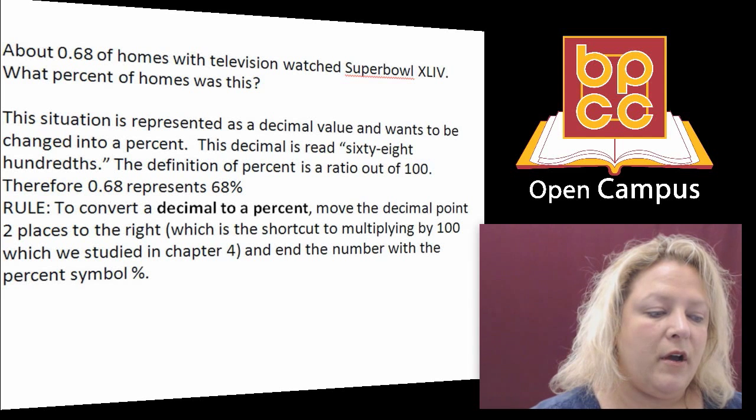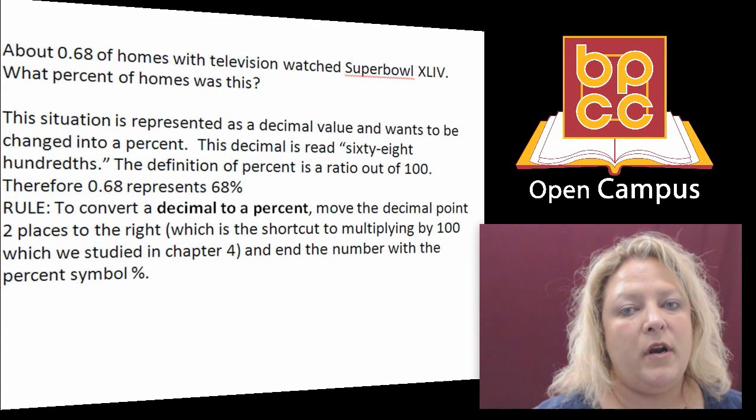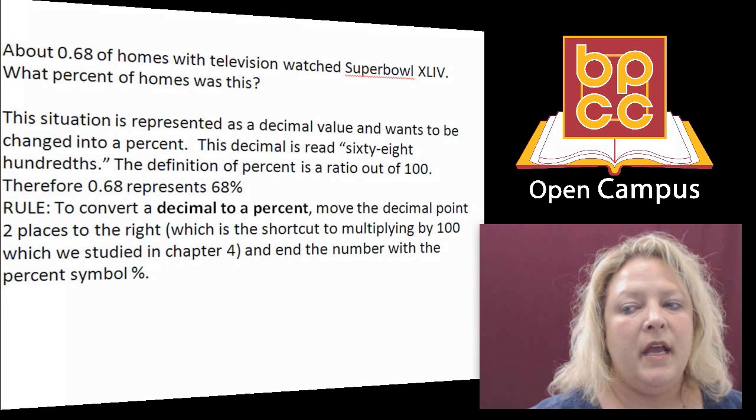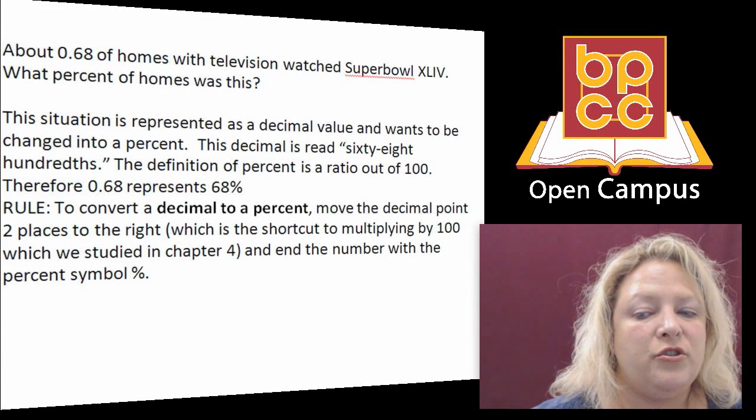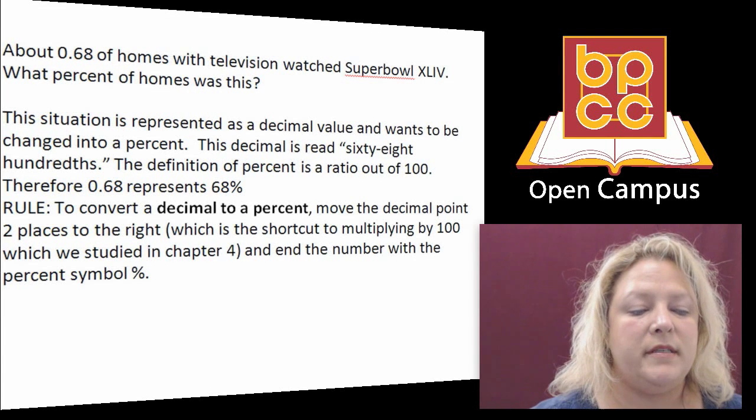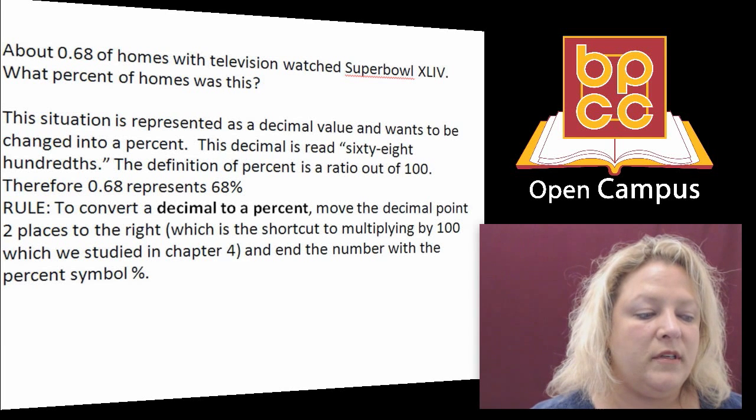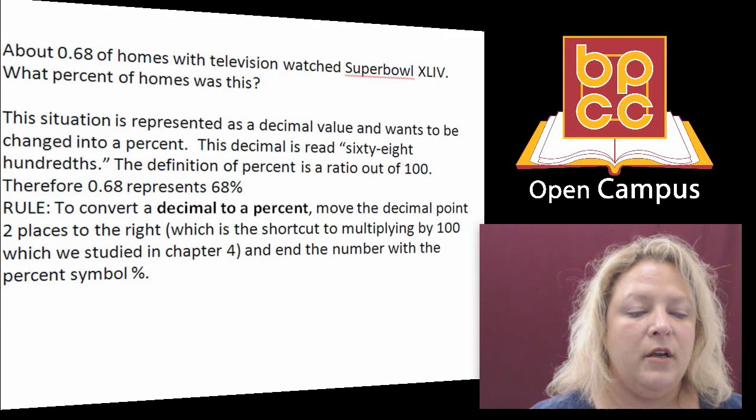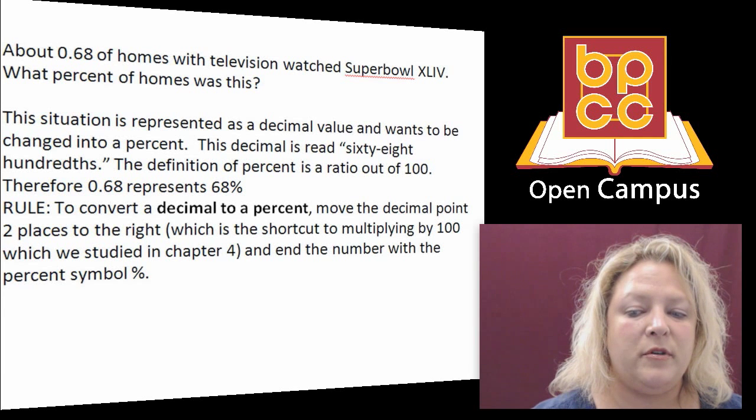So, if you notice, it's always two places because the number 100 has two zeros, and percent is always out of 100. And if you look at this, it says 68 hundredths, which is 0.68. And to turn that into a percent, you move the decimal two places to the right, which gives us 68, which is your whole number, and you put a percent sign behind it.